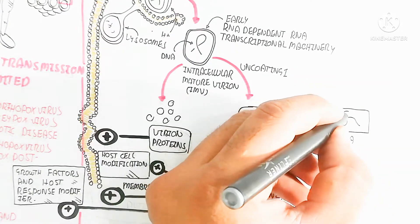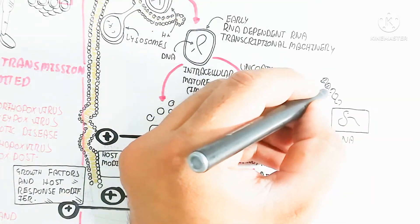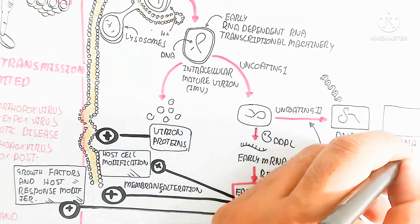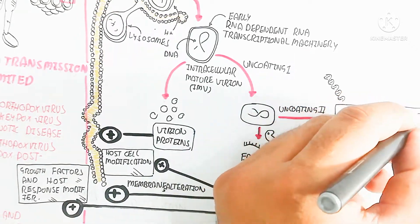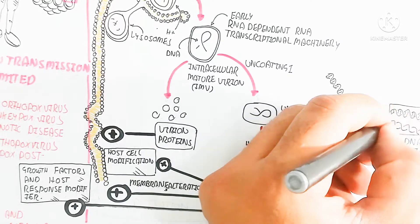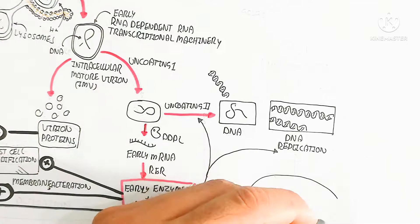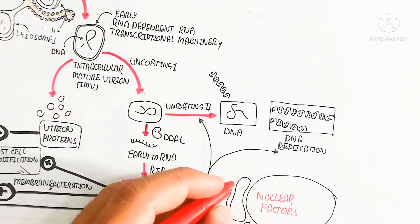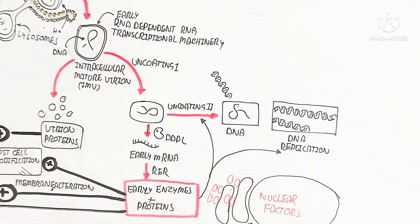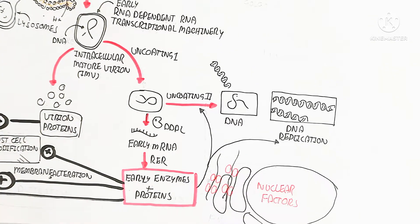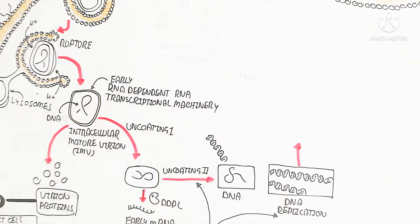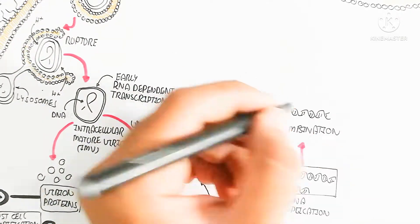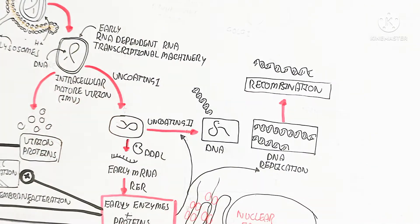In uncoating number two, the DNA is completely separated. DNA replication then occurs, driven by early enzymes and proteins — including DNA polymerase and helicase enzymes — which produce copies of the viral DNA. After DNA replication, genetic recombination can also occur, though this is rare, generating new genetic material.